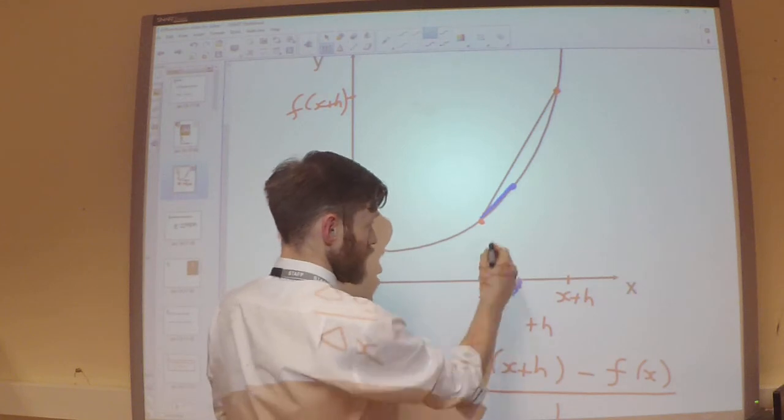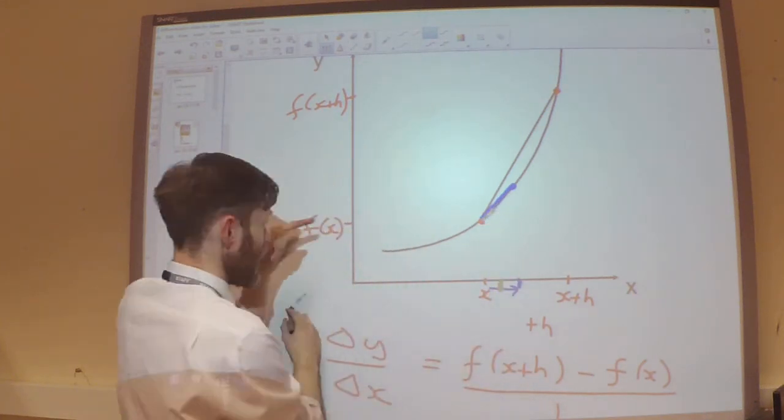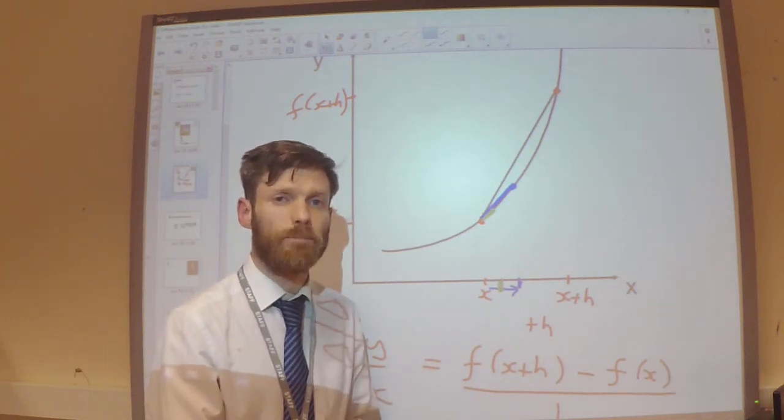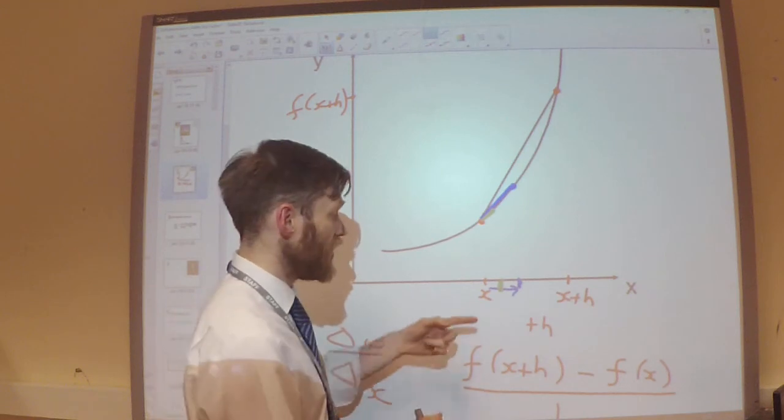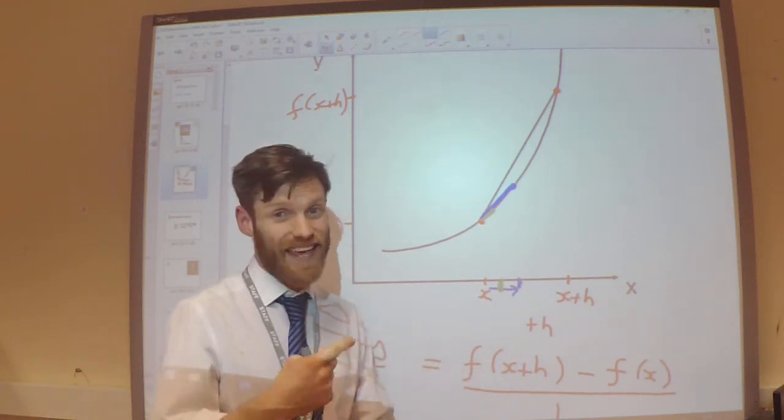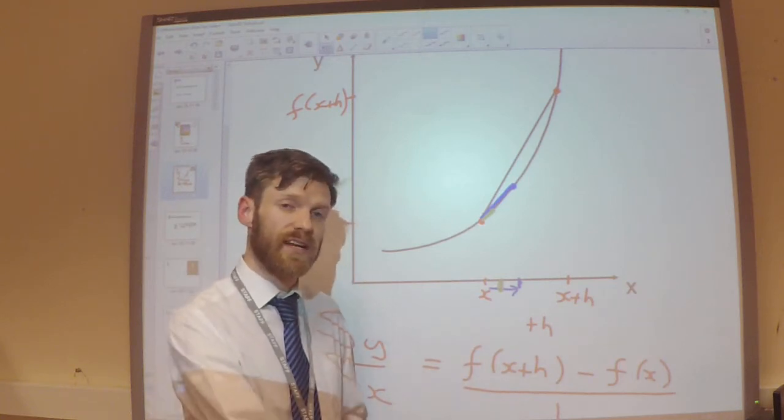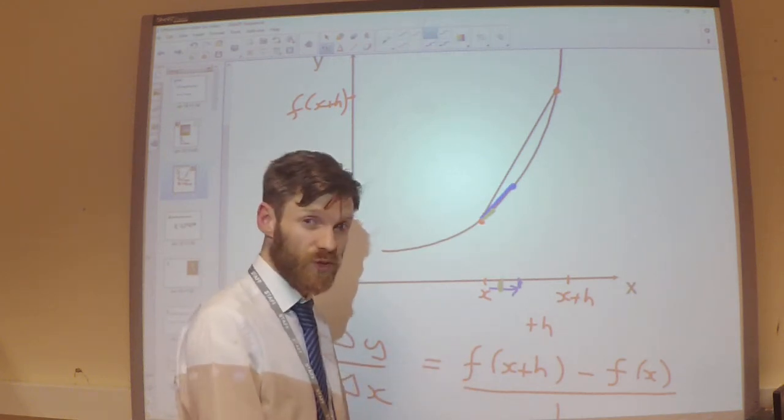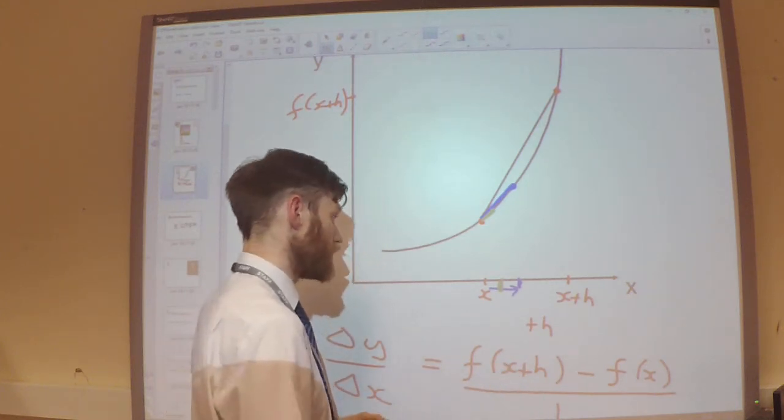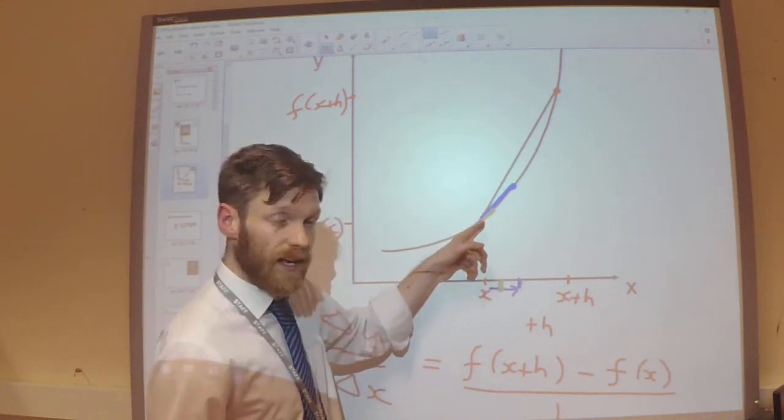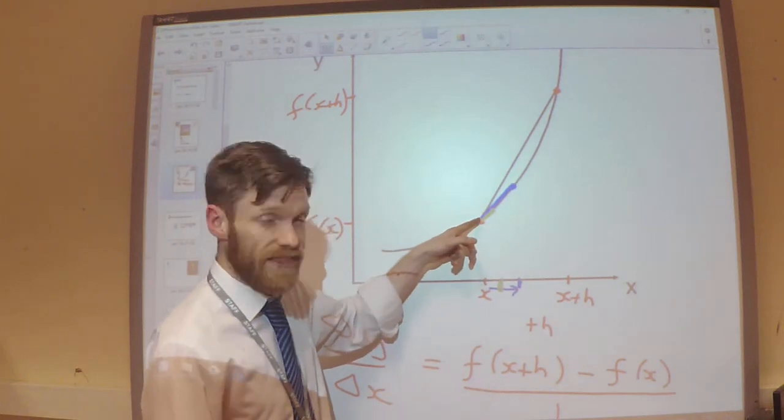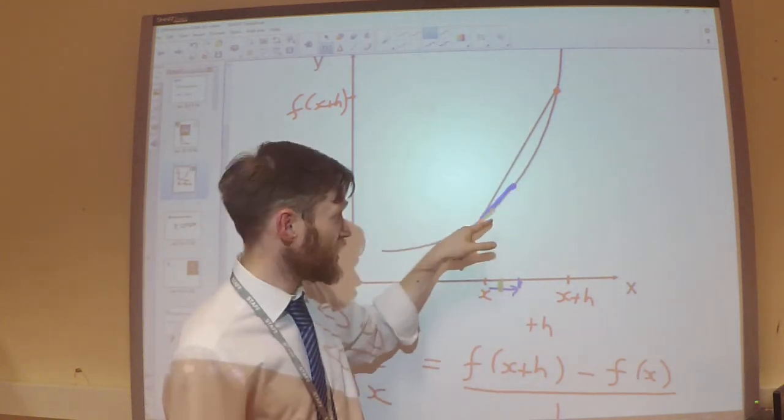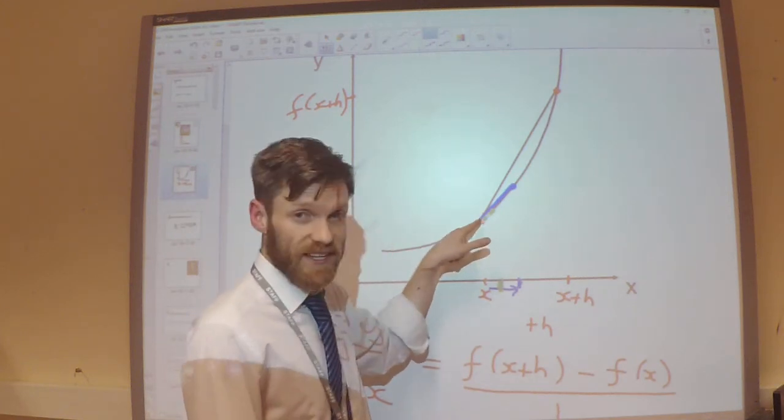So what he said was, I'm going to make h smaller and smaller and smaller and smaller. In the limit of h tending towards zero. So he said, as x gets smaller and smaller and smaller, it gets closer and closer and closer to zero. That's what we mean when we say the limit of h tending towards zero, we mean it gets smaller and smaller and smaller. It gets closer and closer and closer to zero. Then the gradient will get closer and closer to being the accurate gradient at that point. I will no longer get an approximation. As h tends towards zero, I will get the exact gradient at that point.